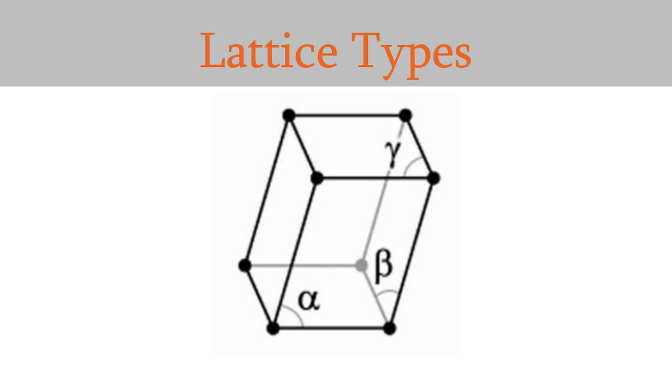The lattice type depends on the lengths of the edges of the unit cell, which are called a, b, and c, and the angles between the edges of the unit cell, which are alpha, beta, and gamma.